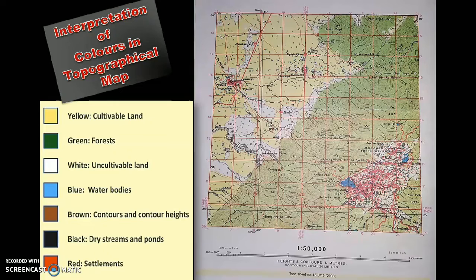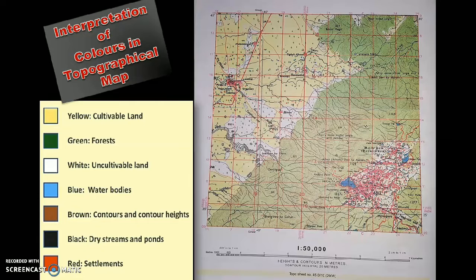Here we can see some of the colors we need to know to read the topographic map properly. For example, yellow shows the cultivable land in the surface sheet. Green signifies the forest area. They are also called yellow wash and green wash in the question that would be asked in your question paper. Why does it signify uncultivable land? Uncultivable land means it is rocky, it is not fit for cultivation, you will not find any sign of water, and it is simply not possible to carry on cultivation in such an area.